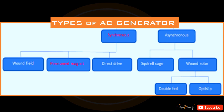Types of AC generators: AC generators are classified into two types — synchronous and asynchronous. Synchronous is then divided into three types: permanent magnet, wound field, and direct drive. Asynchronous is further divided into two types: squirrel cage and wound rotor. Wound rotor is divided into double fed and OptiSlip.